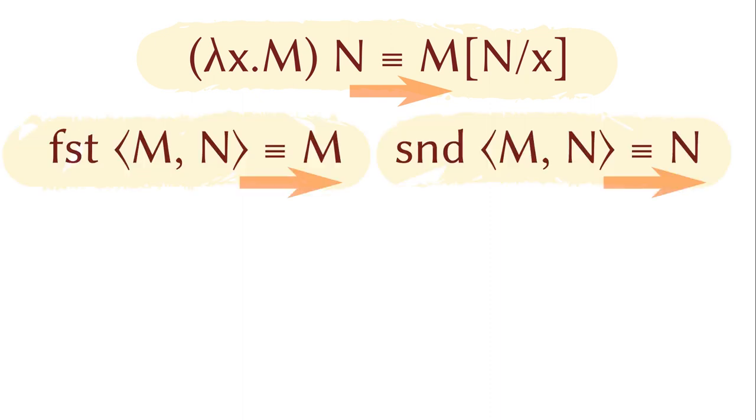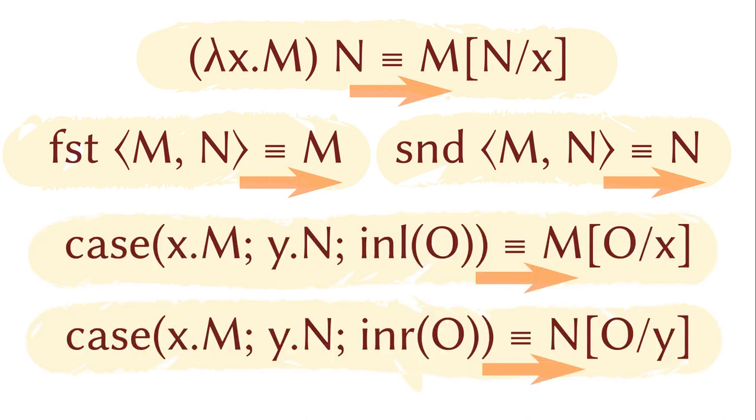There are also beta rules saying that the projection applying to a pair is equal to the corresponding component. Finally, there are two beta rules about the case analysis applying to an element from a known constructor. In all cases, the direction is going from the left to the right.